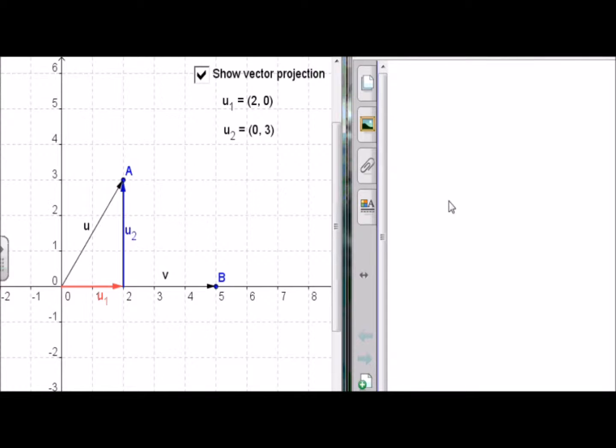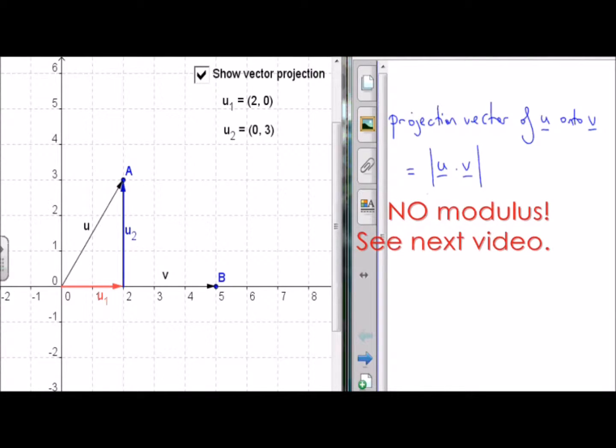Now if we calculate that using the formula, the projection vector of u onto v would equal u dot v, the dot product, divided by the length of v squared, then multiply that by vector v.